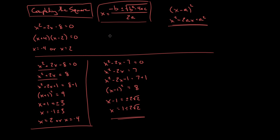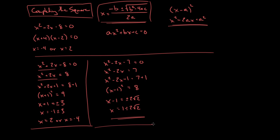If you were to take the general form ax squared plus bx plus c equals 0 and go through this same process of completing the square, what you'd end up finding is the quadratic formula as the solution. The quadratic formula actually comes from completing the square.